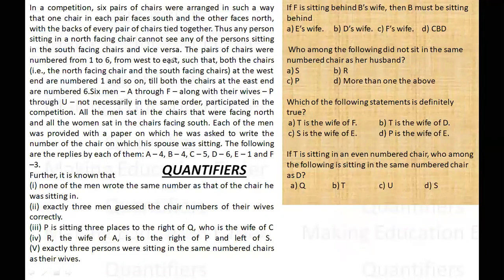Let's read the conditions. None of the men wrote the same number as that of the chair he was sitting in. So if A has written four, A is not sitting on four. If B has written four, B is not sitting on four. Exactly three men guessed the chair number of their wives correctly, so out of A, B, C, D, E, F there are three men who have guessed the numbers right.